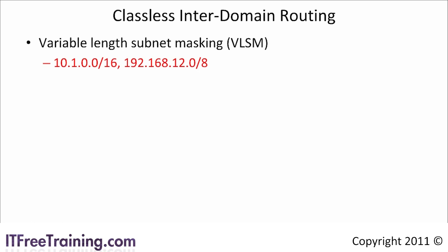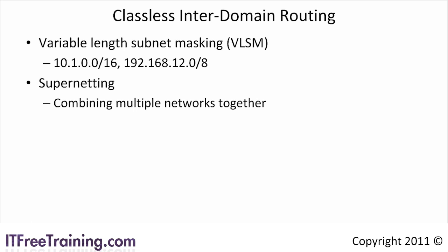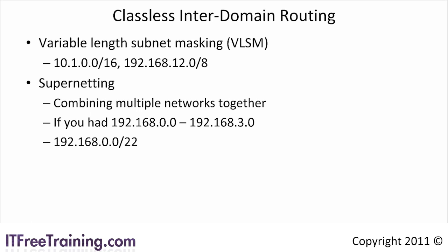The number indicated after the slash indicates the number of bits in the subnet mask. Using classless inter-domain routing, you can also perform what is called supernetting. Supernetting combines multiple networks together to form a larger network. If you had the networks 192.168.0.0 to 192.168.3.0, this would be 4 class C networks with 254 hosts each. By using the subnet mask /22, you can combine the 4 networks into one, giving you one network with 1022 hosts. Once you start using classless inter-domain routing, the IP address space can be divided up any way you want without any of the limits imposed by classful networking.